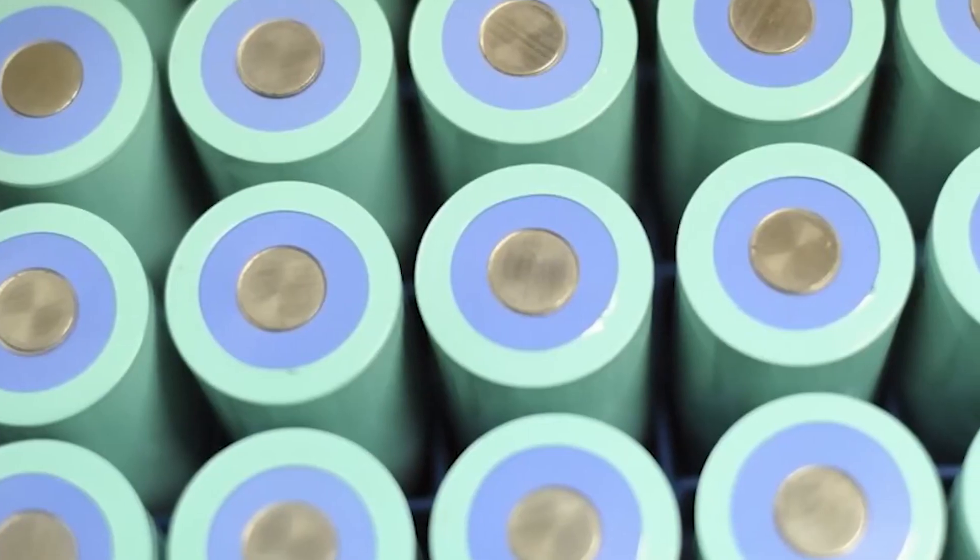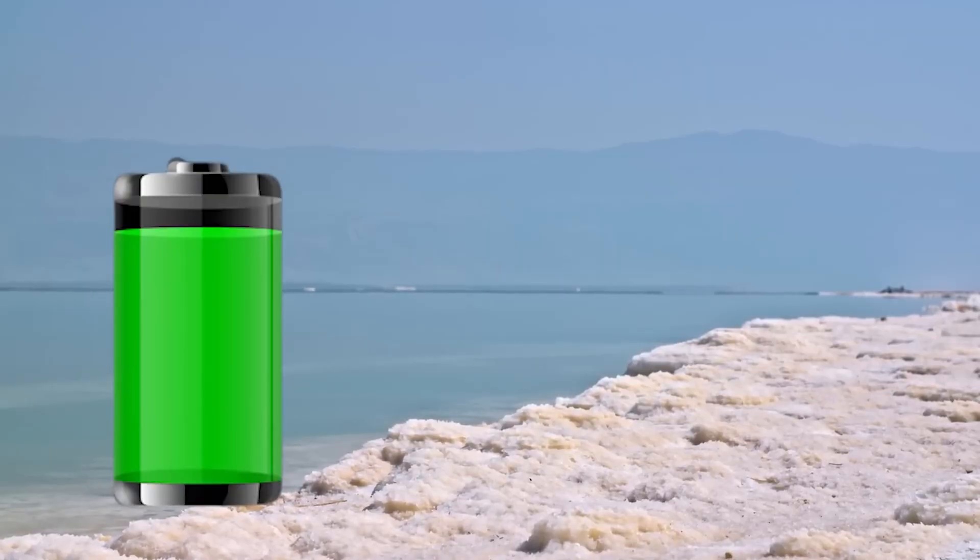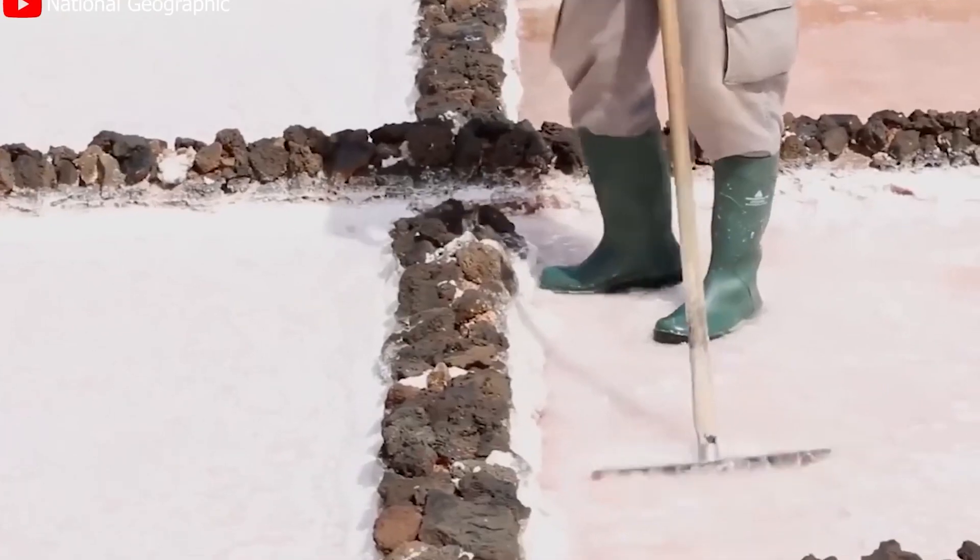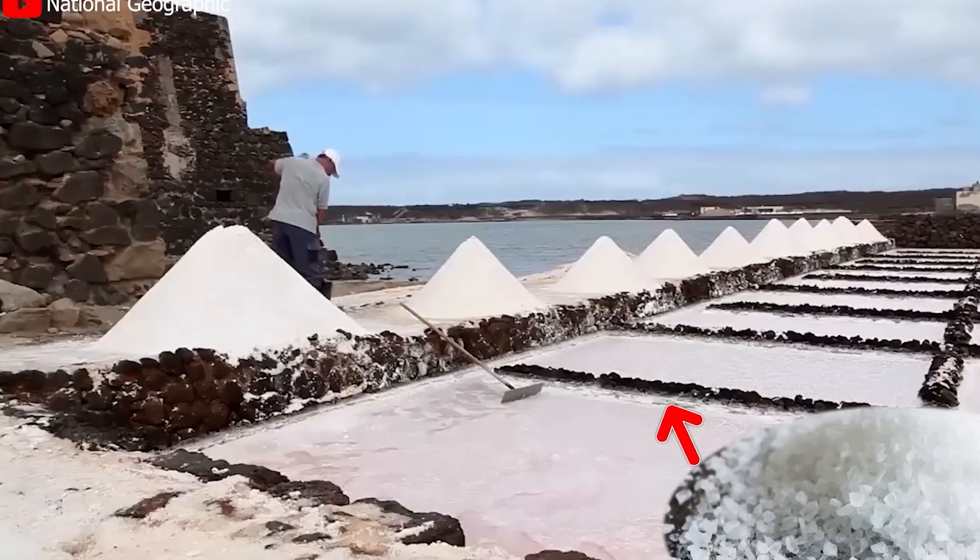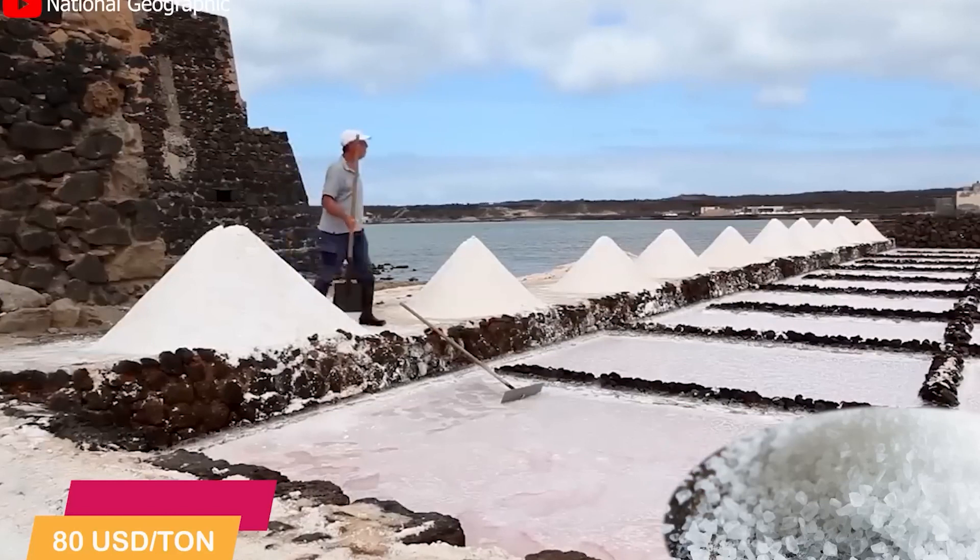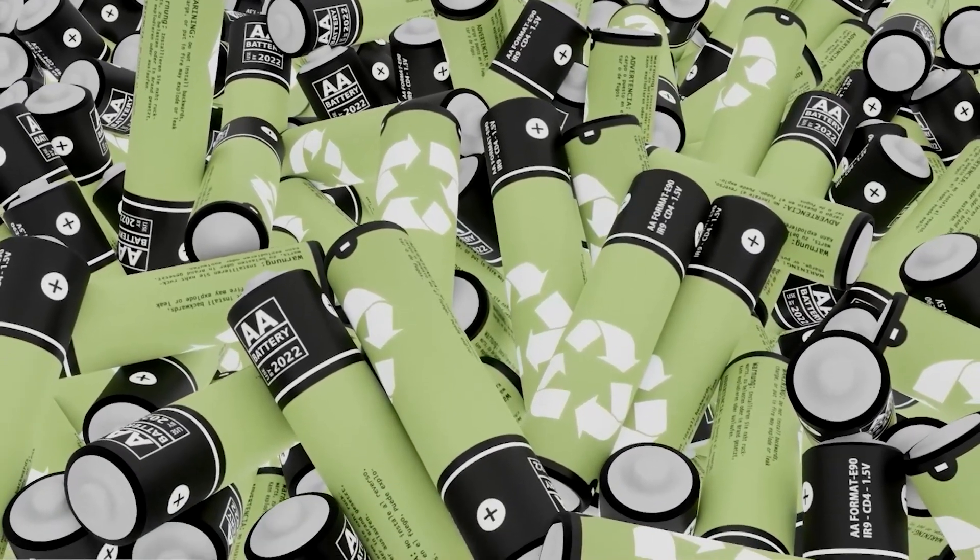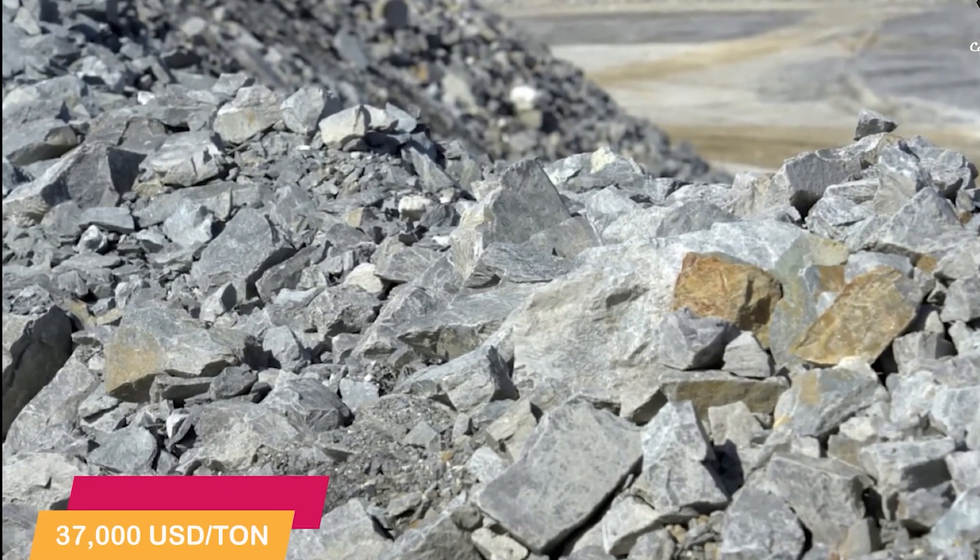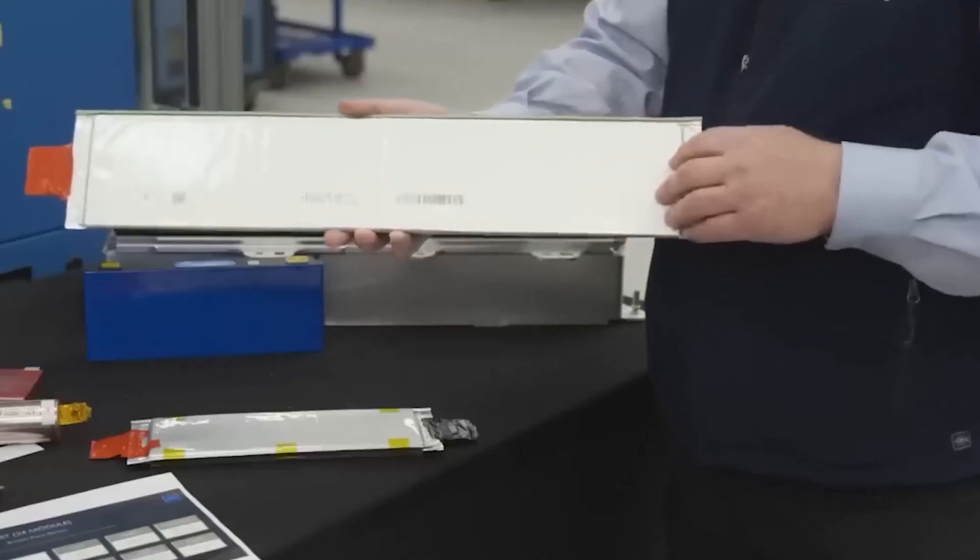Speaking of cost, saltwater batteries have a massive advantage over their counterparts when it comes to material costs. Salt and water, the main components of these batteries, are widely available and relatively inexpensive. For instance, the price of salt is around $80 per ton, which is significantly lower than the raw material cost of manufacturing lithium batteries, which can reach $37,000 per ton. This cost advantage translates into financial benefits for consumers.